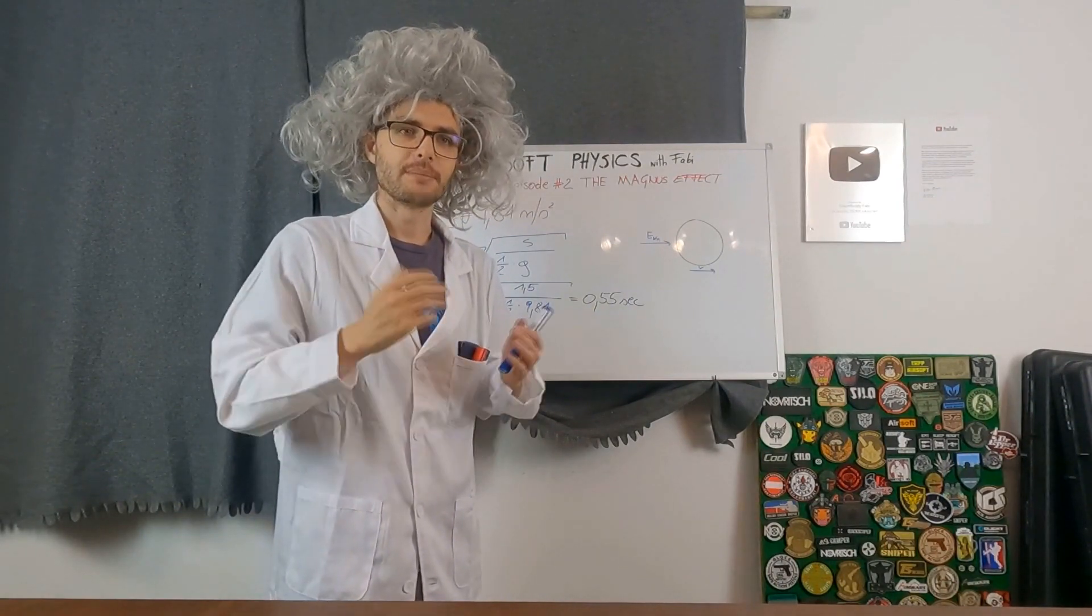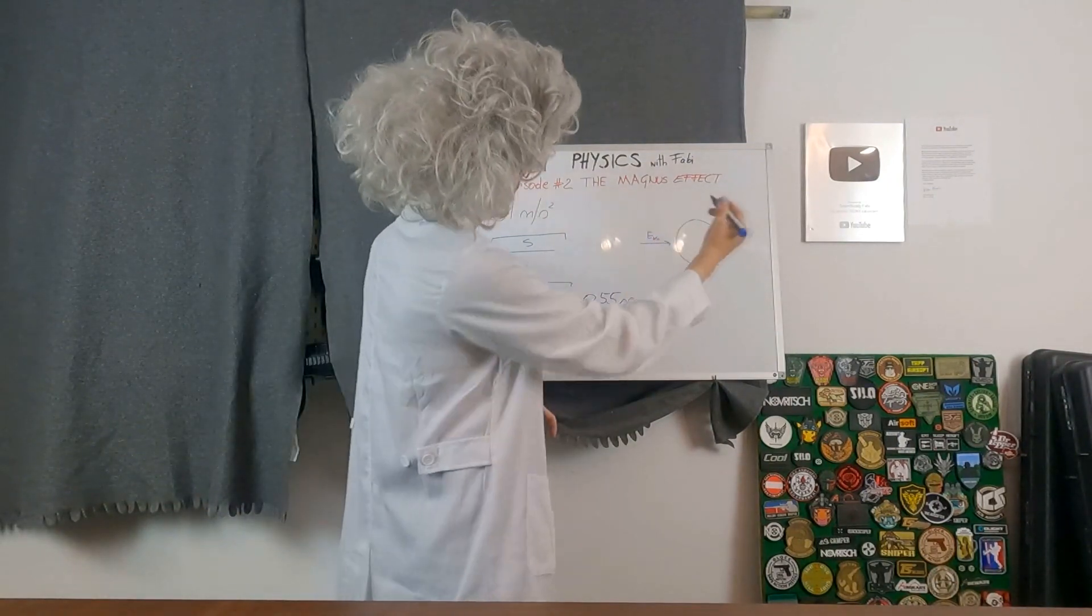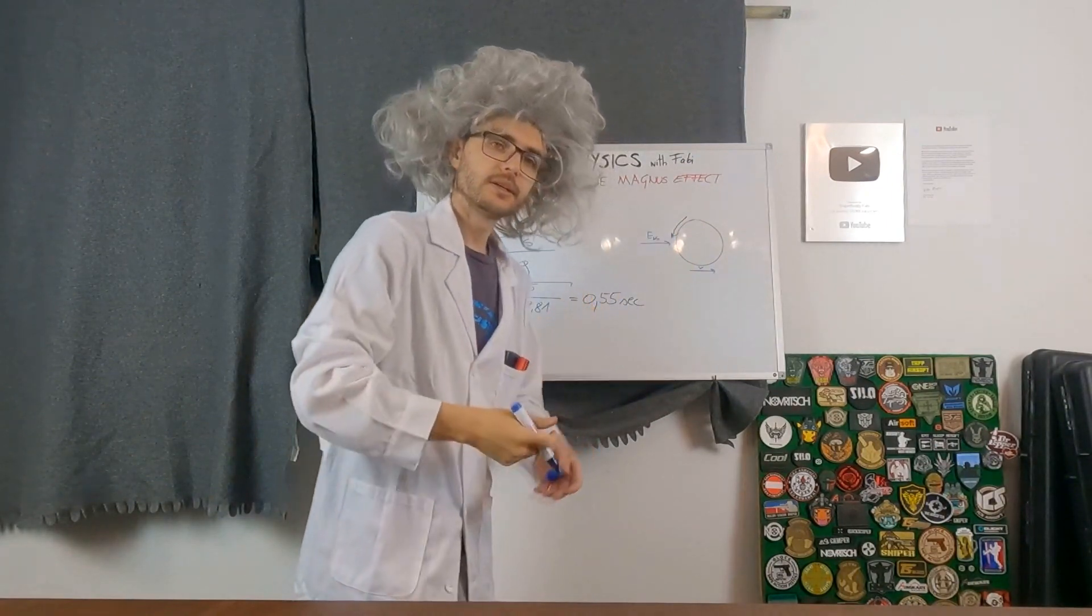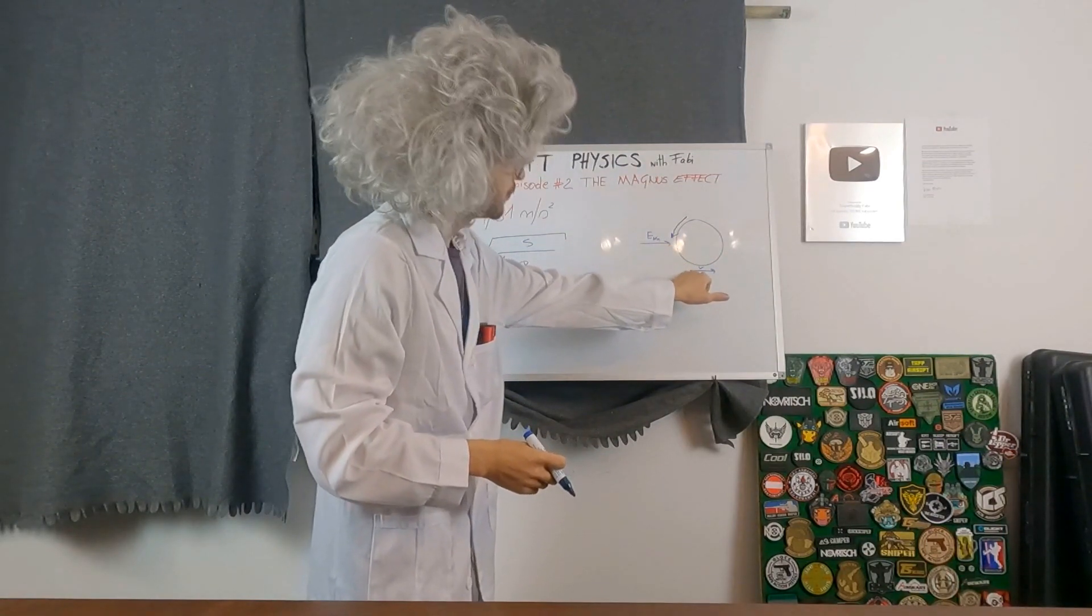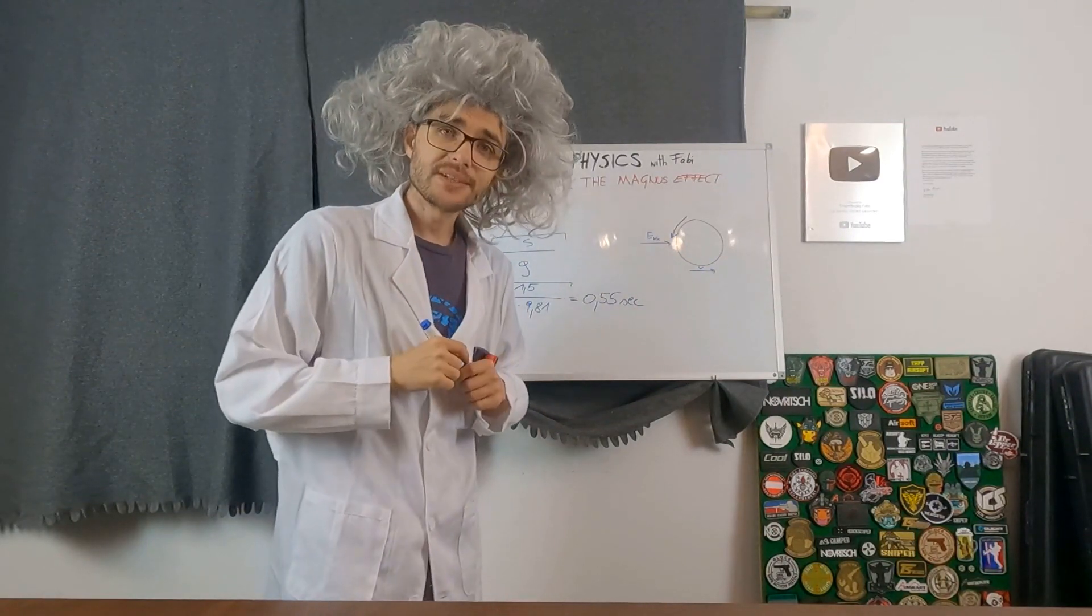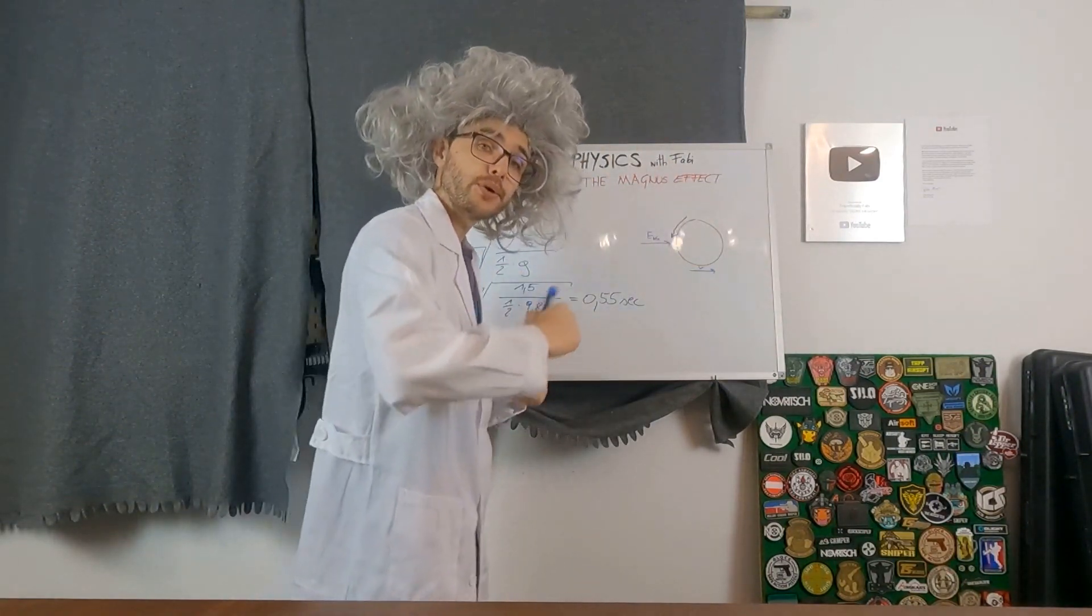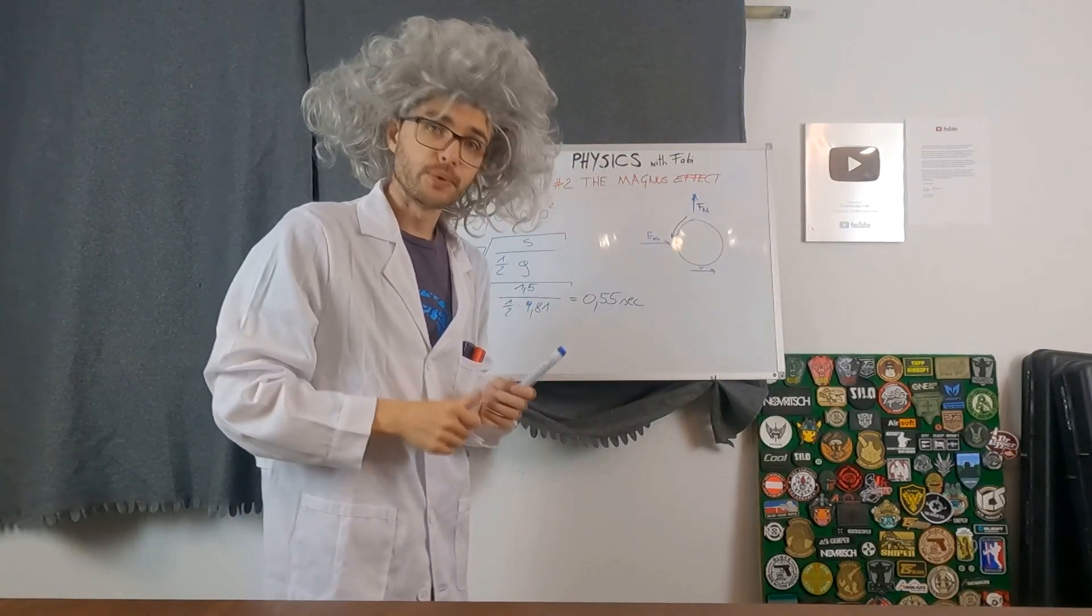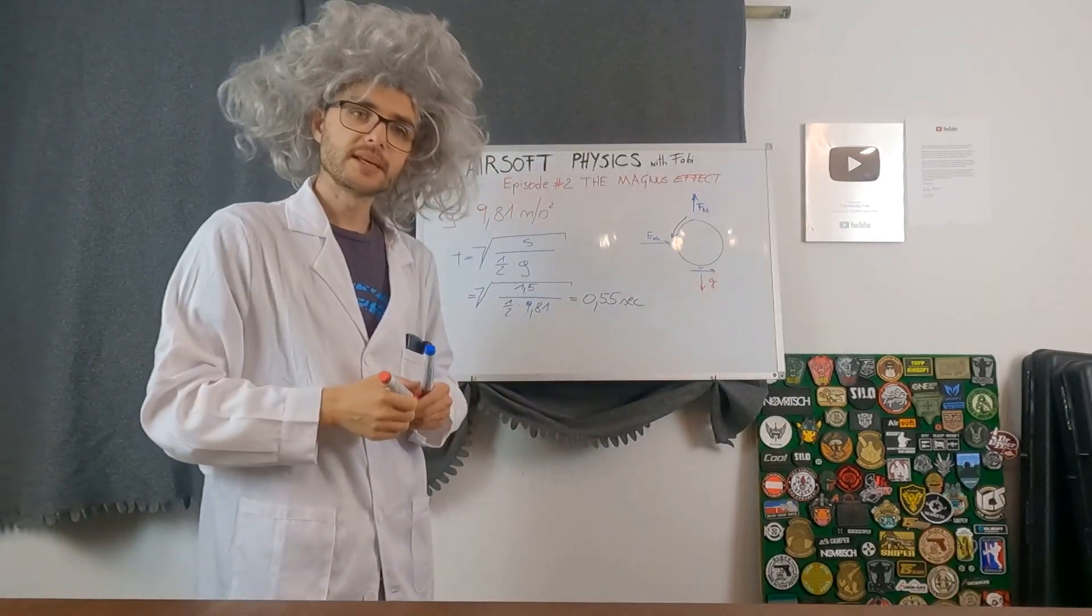And what is the Magnus effect in general? In general, it means we are turning our BB in this direction, so backwards, to generate a push force into the air below the BB. And as a reaction, according to Newton's third law, there is a force pushing the BB up. The Magnus force is working against our g force, which pulls our BB down.